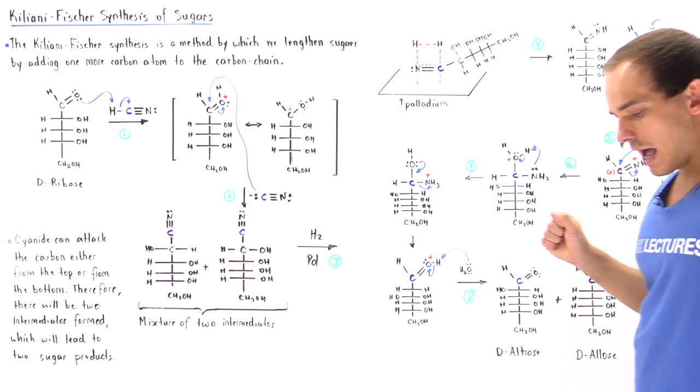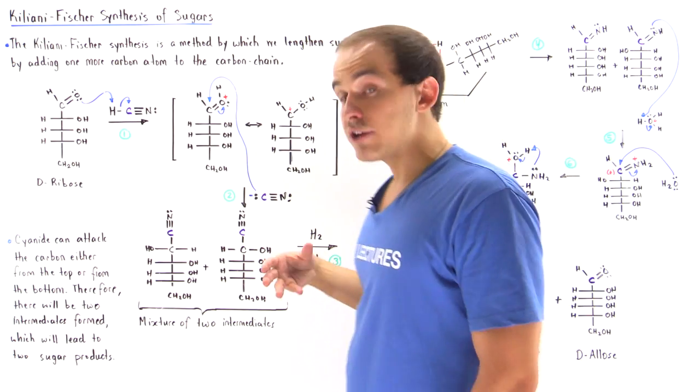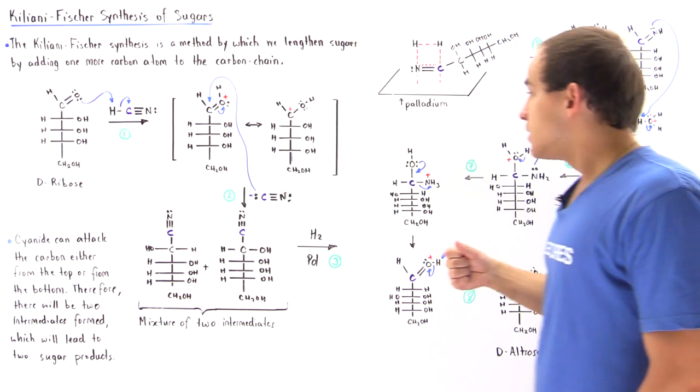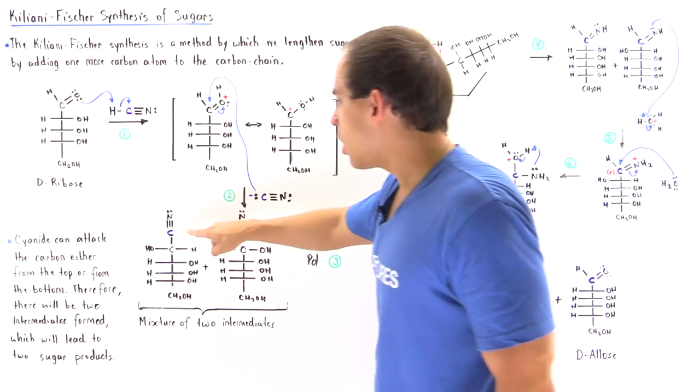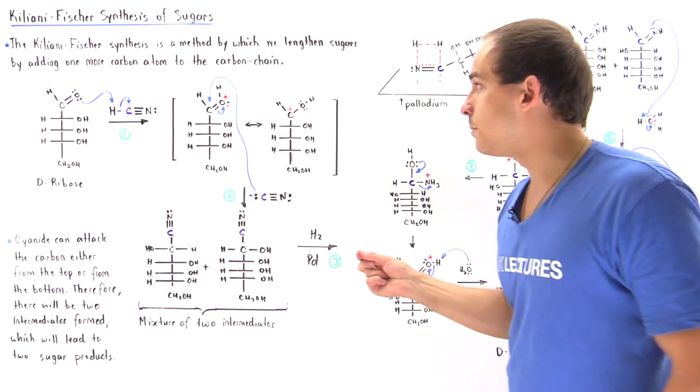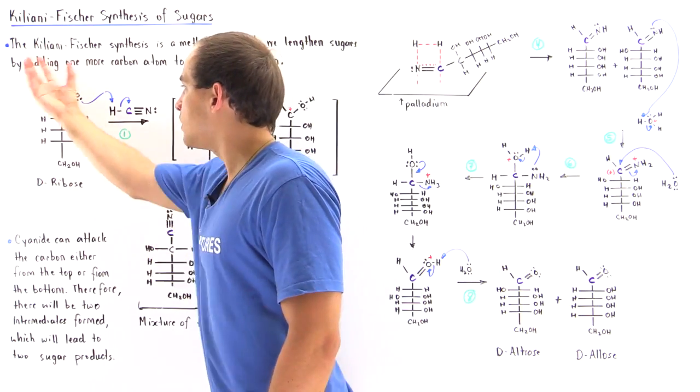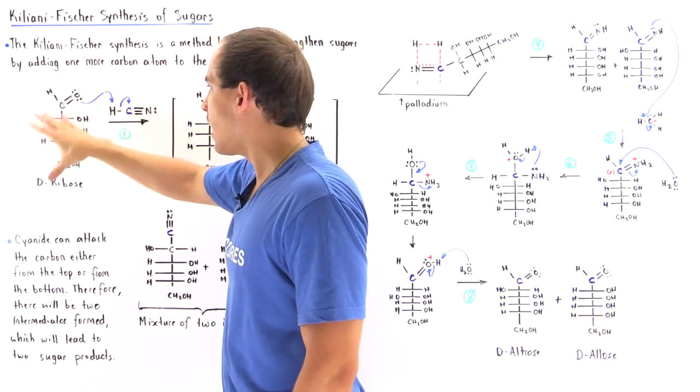In step number five, we basically add hydronium in water. We add our acid hydronium, which acts to protonate this nitrogen atom to form a resonance stabilized intermediate where we have our delocalization of positive charge among this nitrogen and among this carbon. Notice this carbon is given in purple, because initially this carbon was not found on our D-ribose. This carbon was added onto our molecule, and this is the sixth carbon that basically elongates our chain.